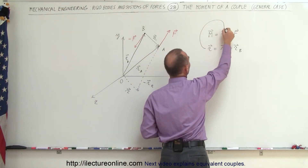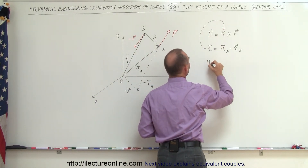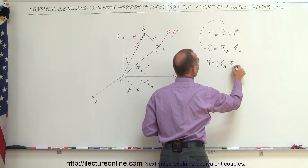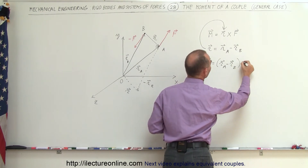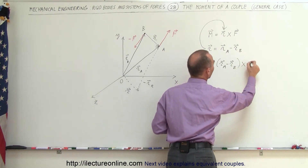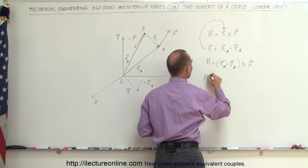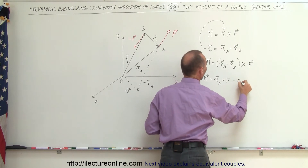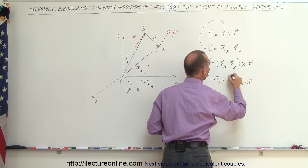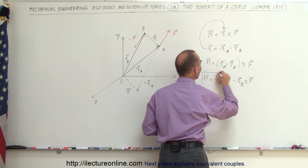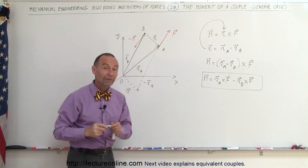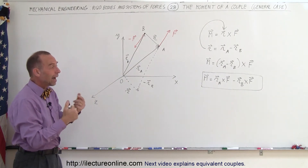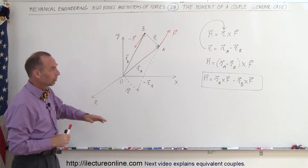If you then substitute that into our equation for the moment, we get the moment is equal to the quantity R sub A minus R sub B — the difference of the two vectors — multiplied via the vector product times F. So we can then say that the moment is simply equal to R sub A cross F minus R sub B cross F. That would be another way of writing the moment of two forces that are parallel to each other, equal in magnitude and opposite in direction.